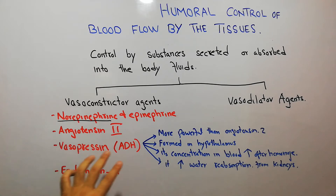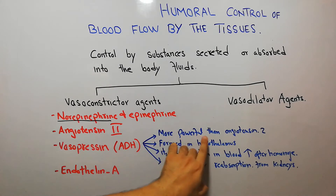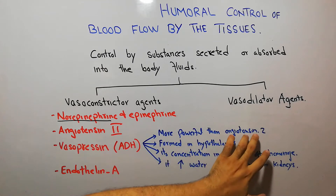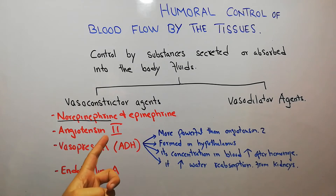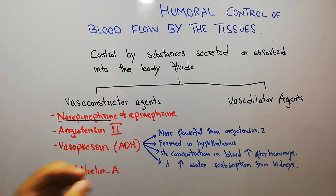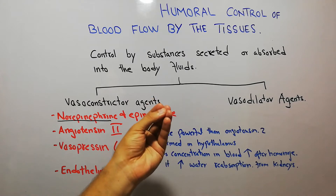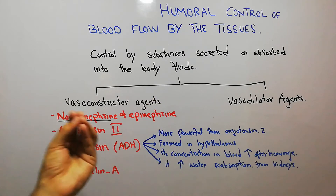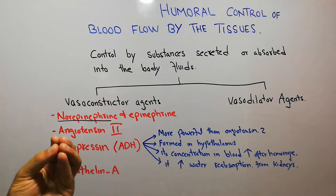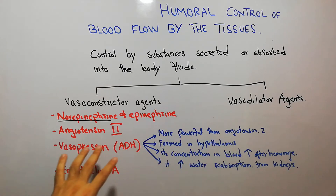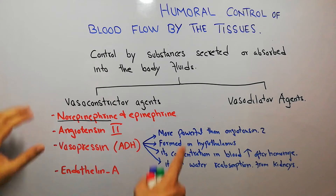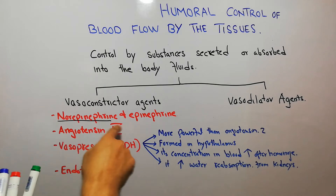Vasopressin or antidiuretic hormone is a more powerful vasoconstrictor agent than angiotensin-2. We have discussed that angiotensin-2 is very powerful — one millionth of a gram can increase mean arterial pressure by up to 60 mmHg — but vasopressin is even more powerful than angiotensin-2 and can increase blood pressure more.